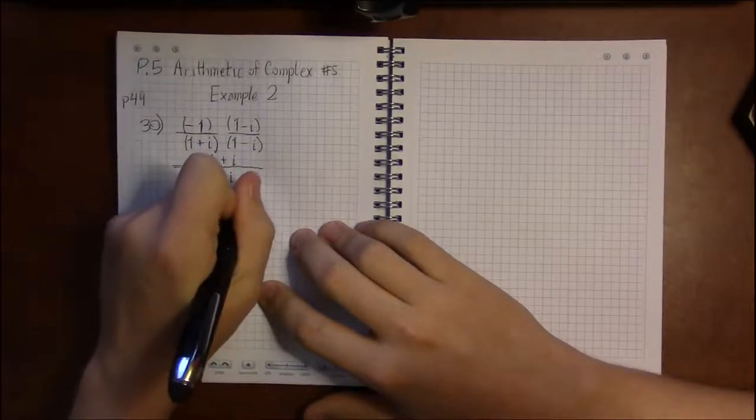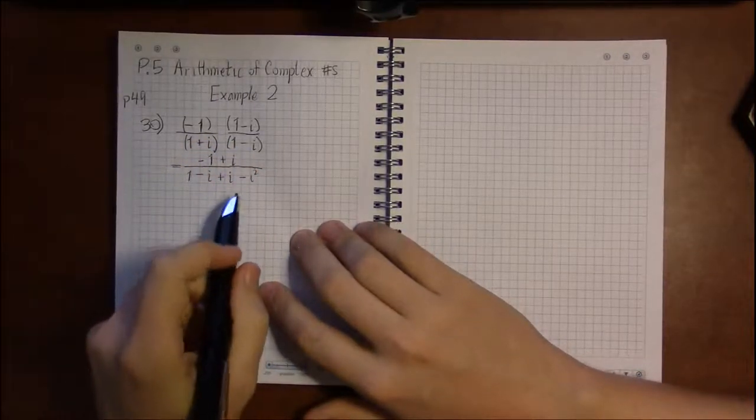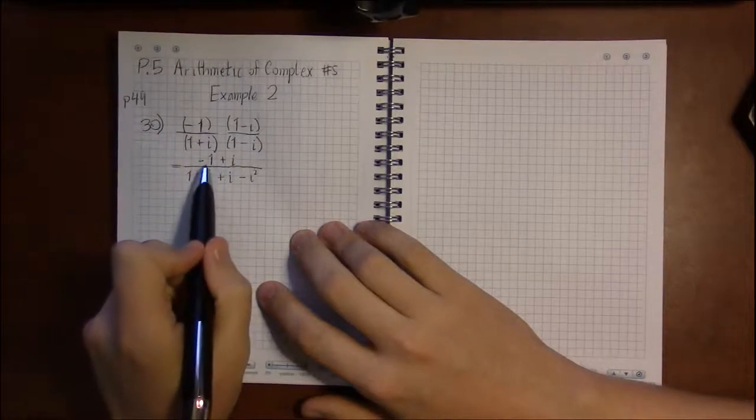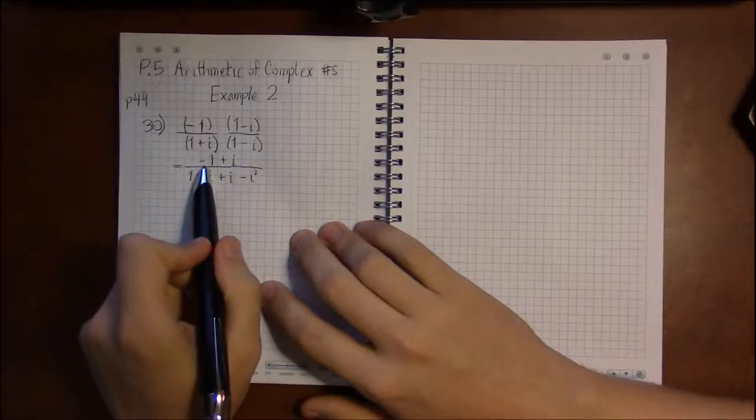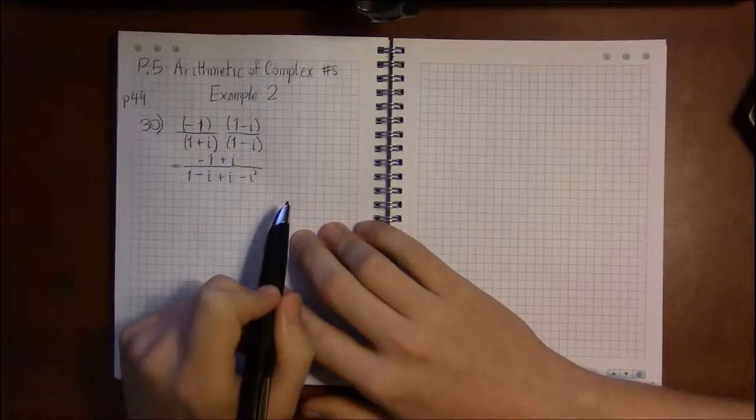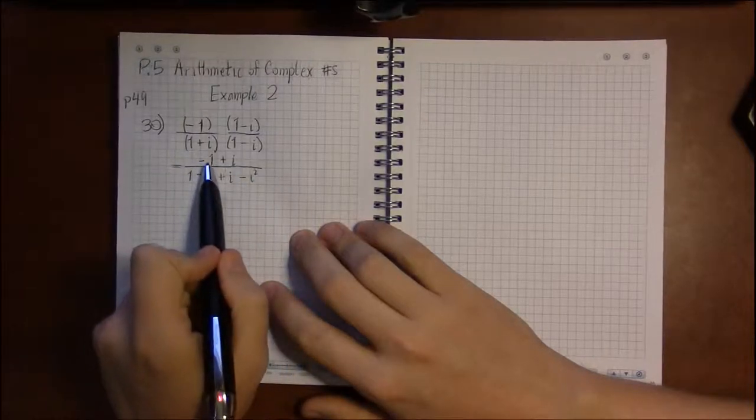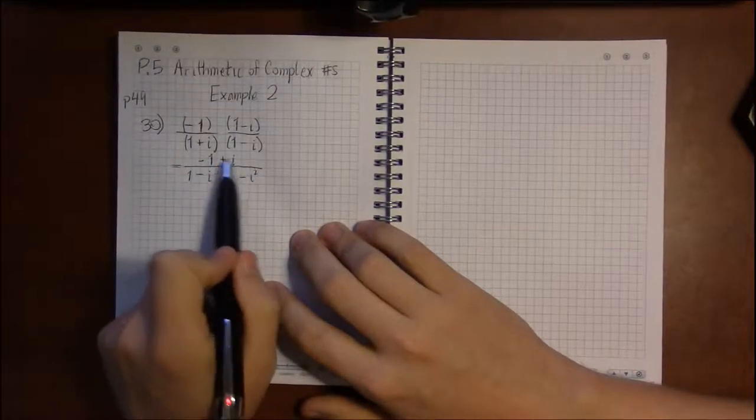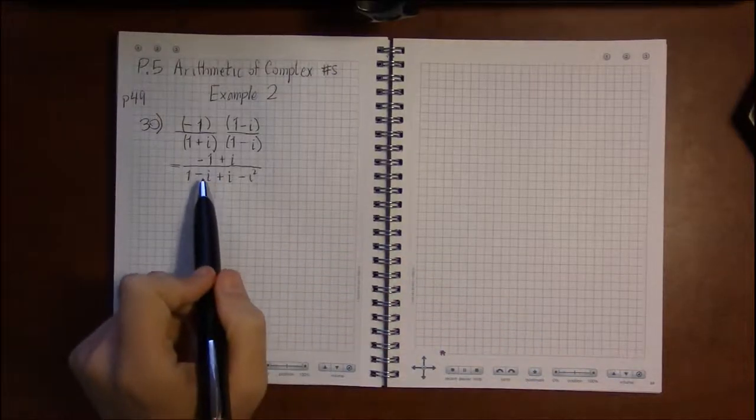i times minus i is minus i squared. And not much we can do up top. Minus 1 and i are not like terms, just like minus 1 and x are not like terms. You can't combine them into one thing, so we have to leave it as it is.